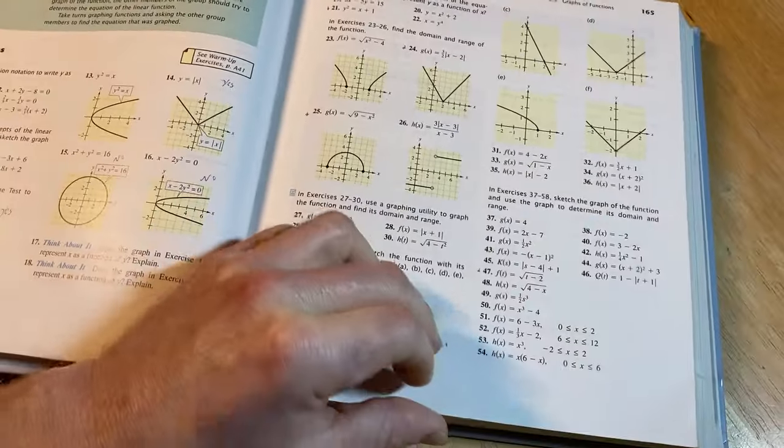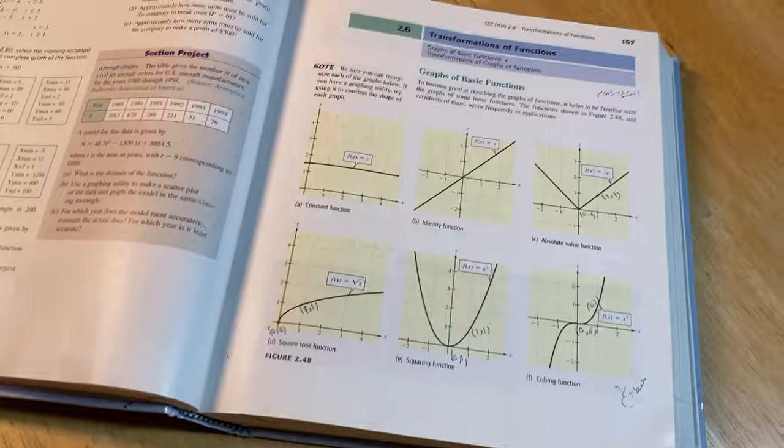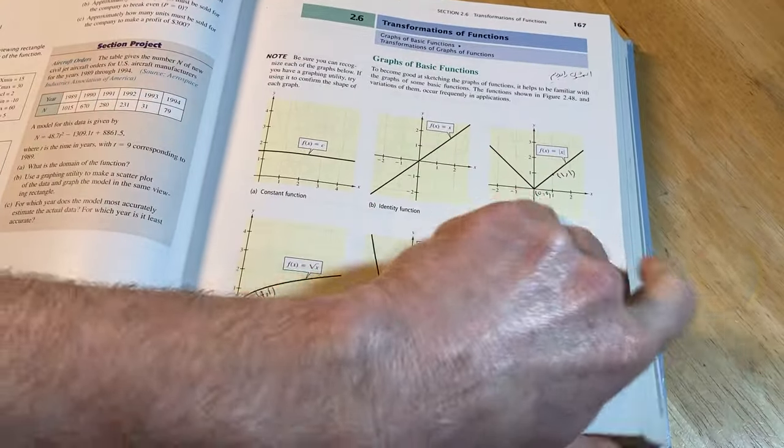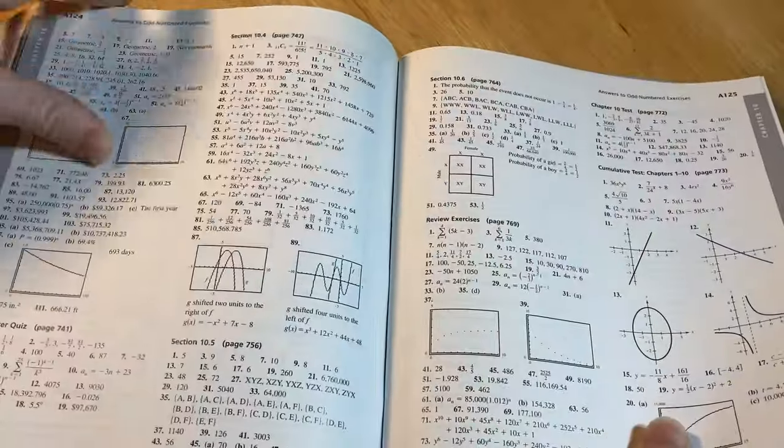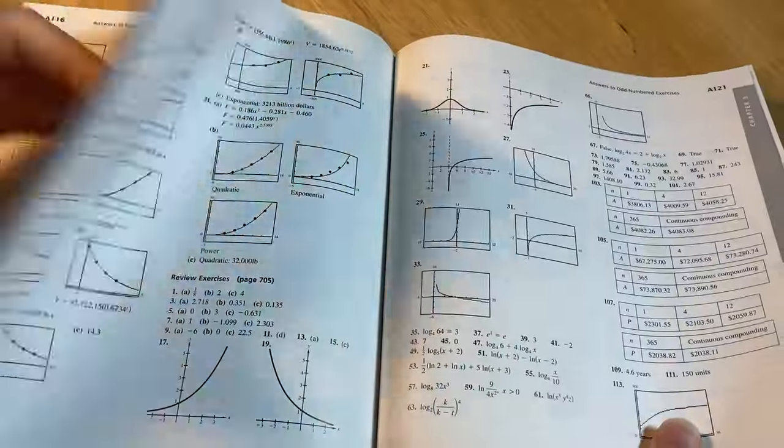There's plenty of exercises as you can see here so you get tons of examples. And this one being a modern book does have some answers in the back of the book. And you can see it has answers to the odd numbered exercises.